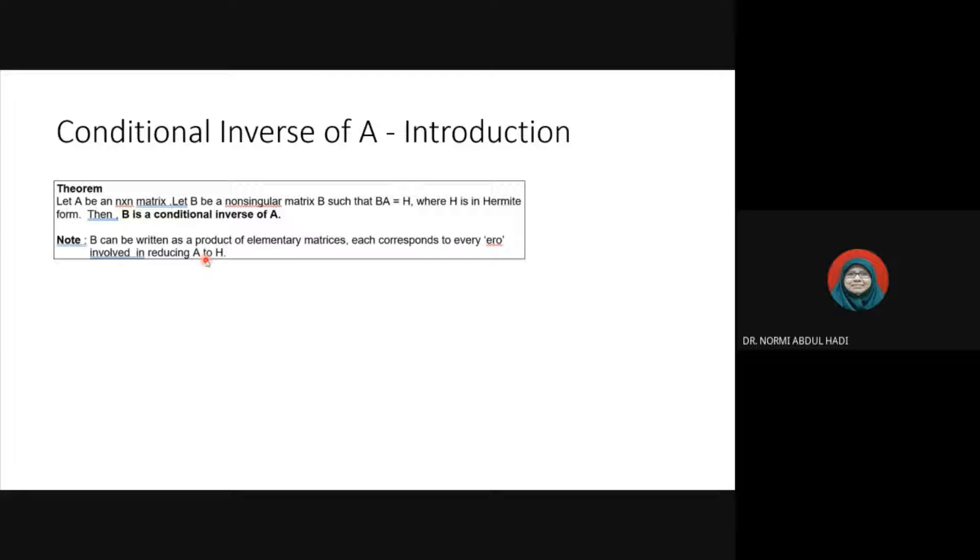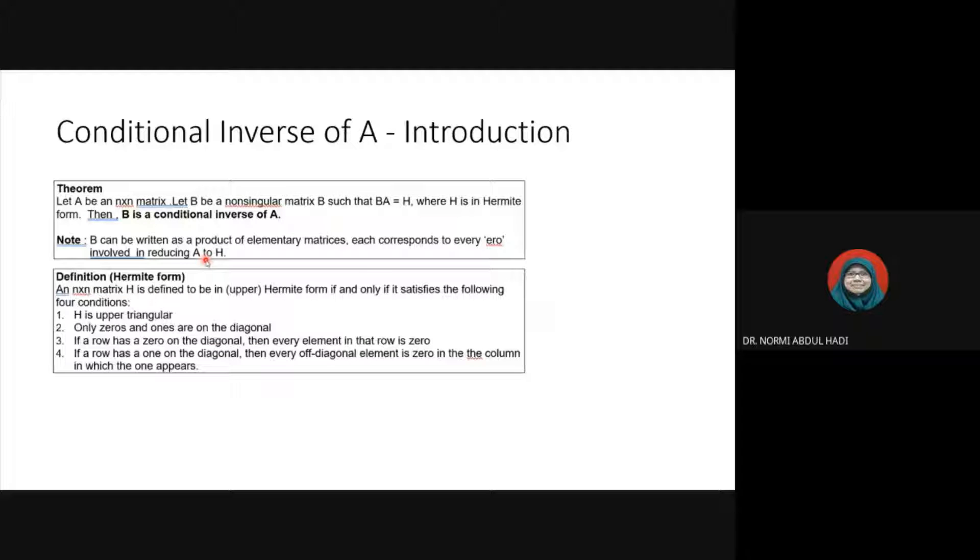What is Hermite form? An n by n matrix H is defined to be in Hermite form if and only if: first, H is upper triangular; second, only zeros and ones on the diagonal. This is an example of an upper triangular matrix with only zero or one on the diagonal.